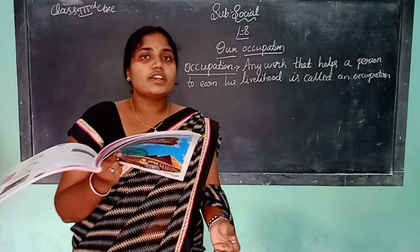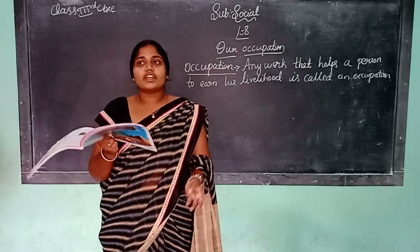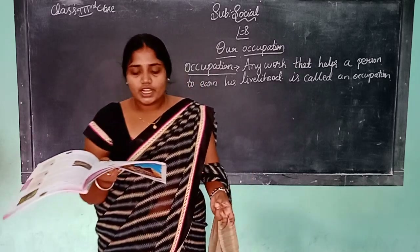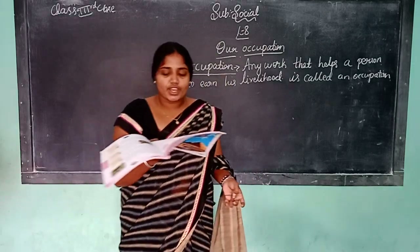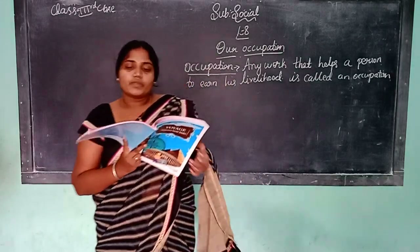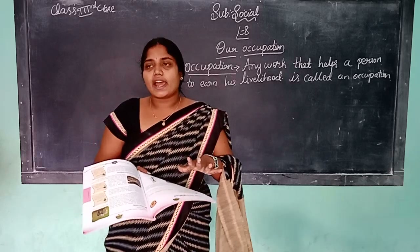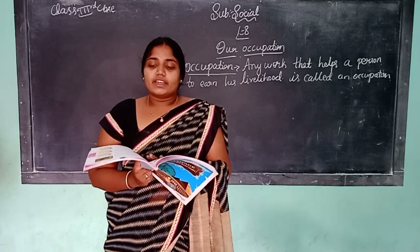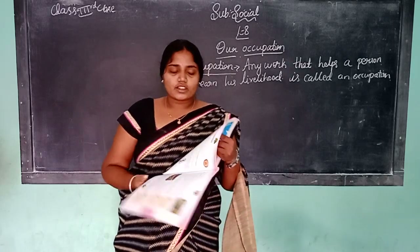Crops also depend on the climate. We can see seasonal crops as well. For example, farmers may grow rice in rainy months. In winter months it is the rainy season. In rainy season we can grow rice, and in summer season other crops are grown.